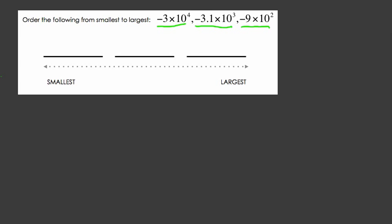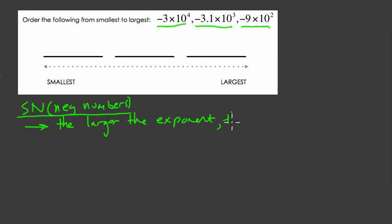With negative numbers, the rule that we're going to hold on to is the following: the larger the exponent, and this is for scientific notation with negative numbers, the basic rule is that the larger the exponent, the smaller the number. This is what I use to guide me through these kinds of problems.